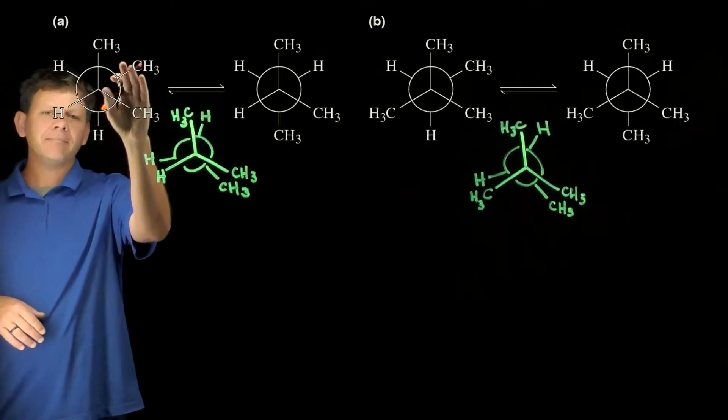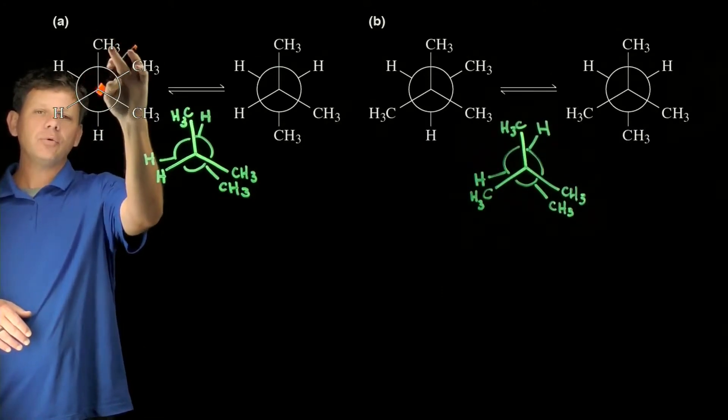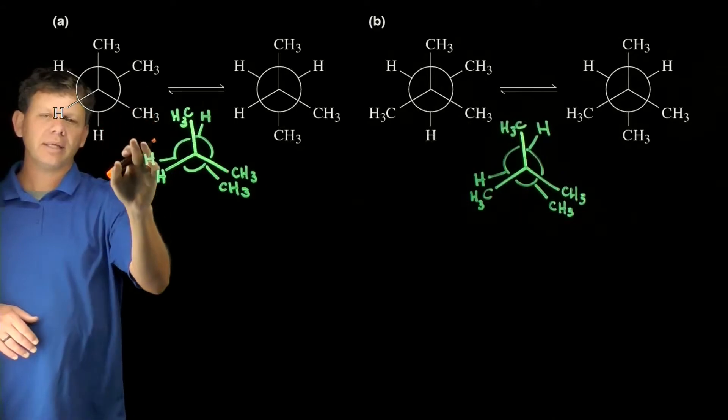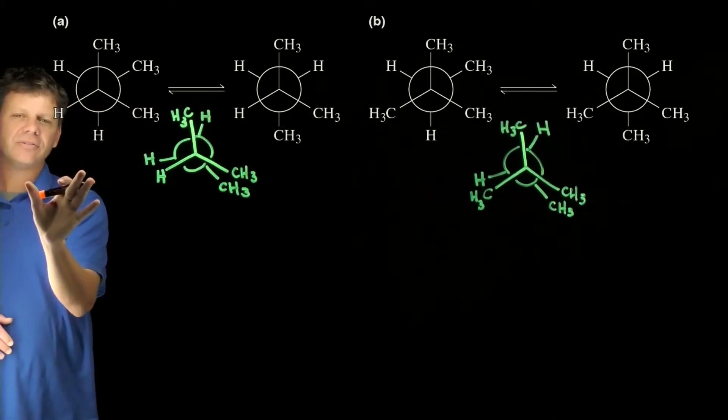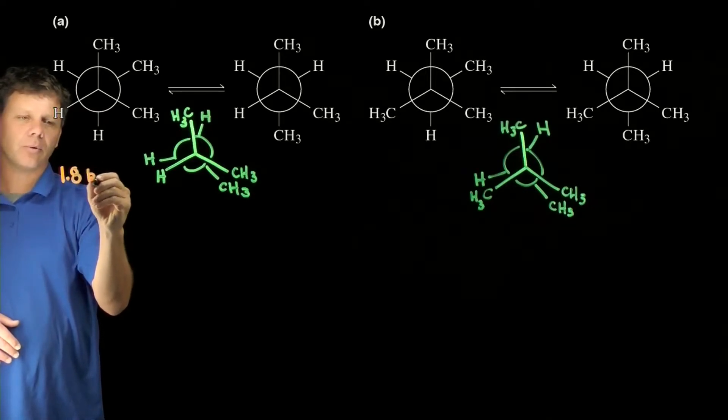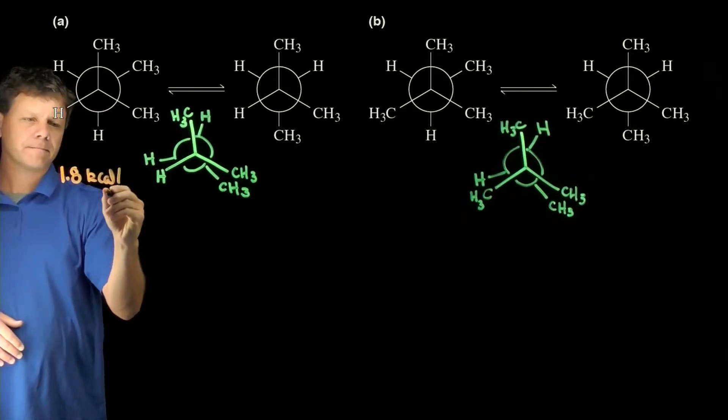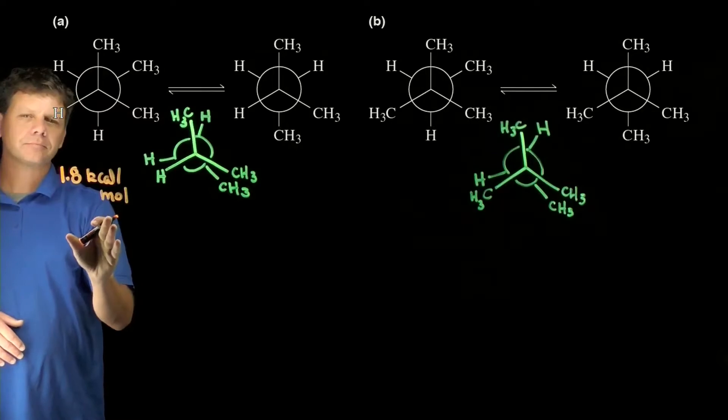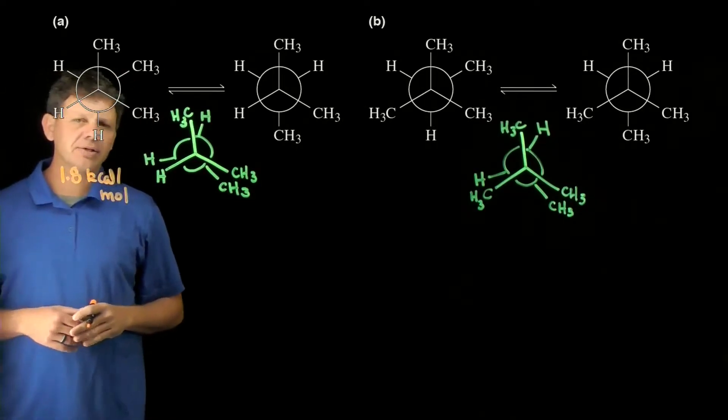Over here in A, in the reactant we have two gauche interactions—one here methyl-methyl and one here. That's going to mean that A starts at around 1.8 kilocalories per mole based on having two gauche interactions.